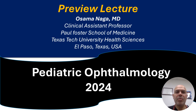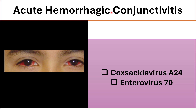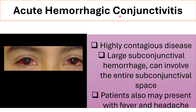Hello everyone, this is a preview in pediatric ophthalmology. Acute hemorrhagic conjunctivitis — when you see blood under the conjunctiva — is caused by Coxsackie virus A24 and enterovirus 70. It is a highly contagious disease.